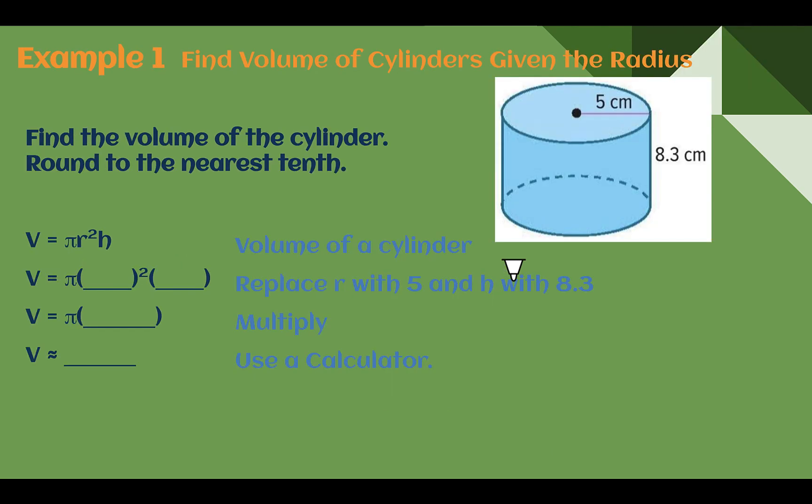Example one, find volume of cylinders given the radius. Find the volume of the cylinder, round to the nearest tenth. So volume for cylinder always is going to start off using that volume formula, V = πr²h. R is the radius. So if I'm looking at my cylinder here, remember radius is from the center to the edge. So our radius here is 5. I can plug that in. And my height is 8.3. So I could put that in place of h. Now I can just multiply it out. So 5² is 25 times 8.3 is 207.5.